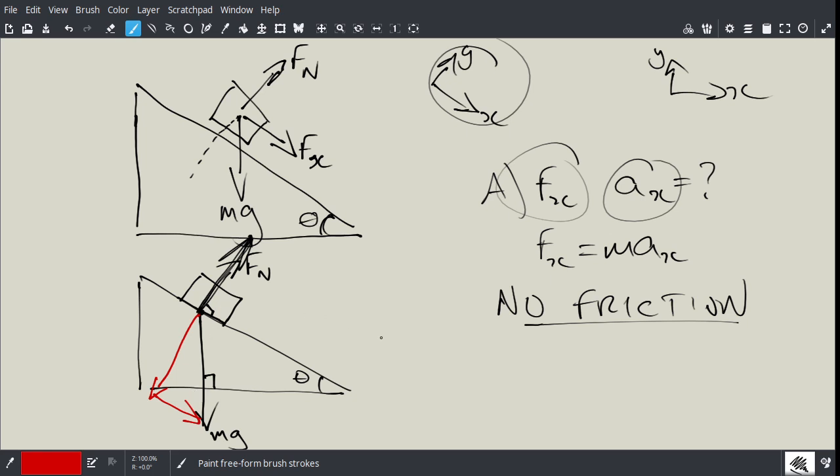And also remember, if I go back to black here, the sum of the forces in the y direction must equal zero because it's this, right, m ay, and I know ay is zero. Why is ay zero? Because the mass is not accelerating in this plane. It's accelerating in this plane.